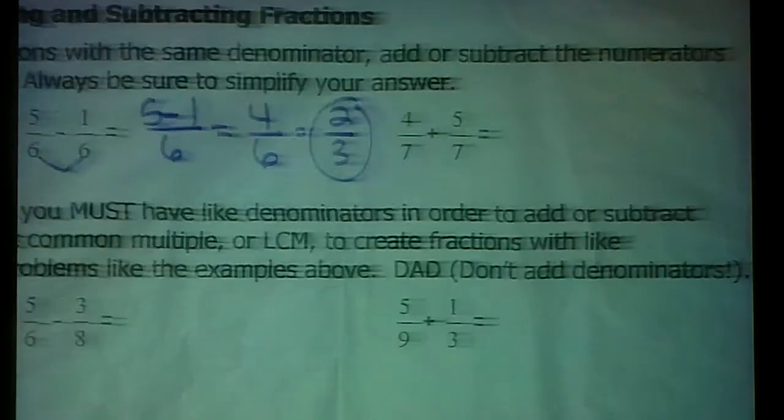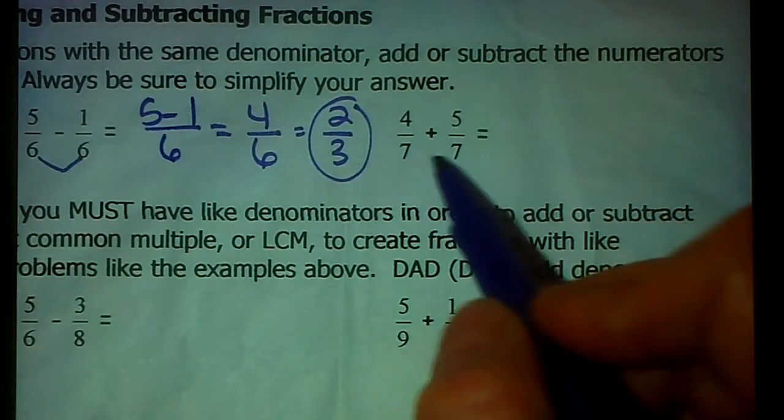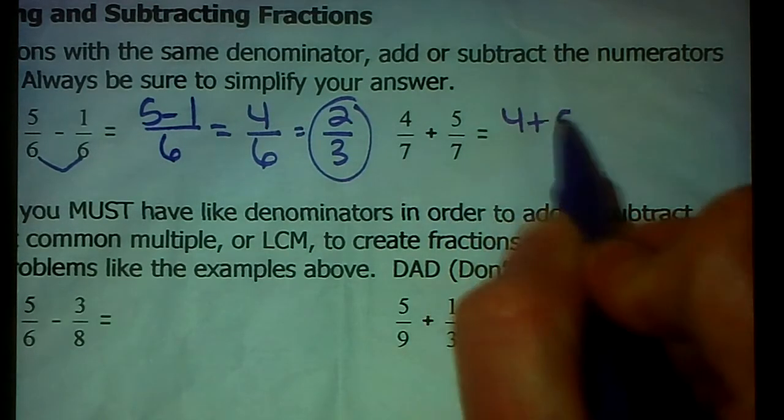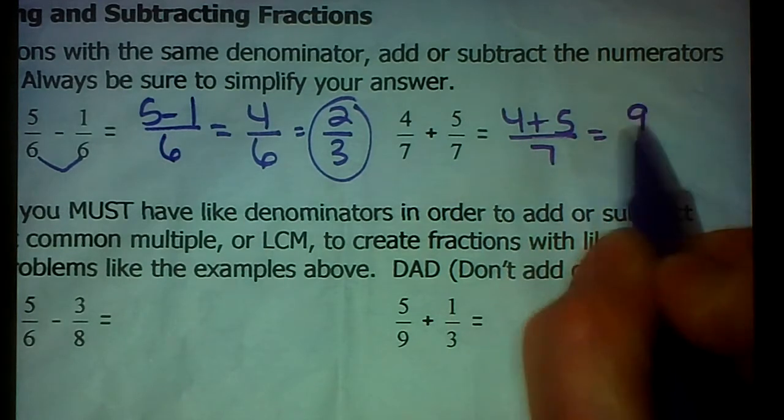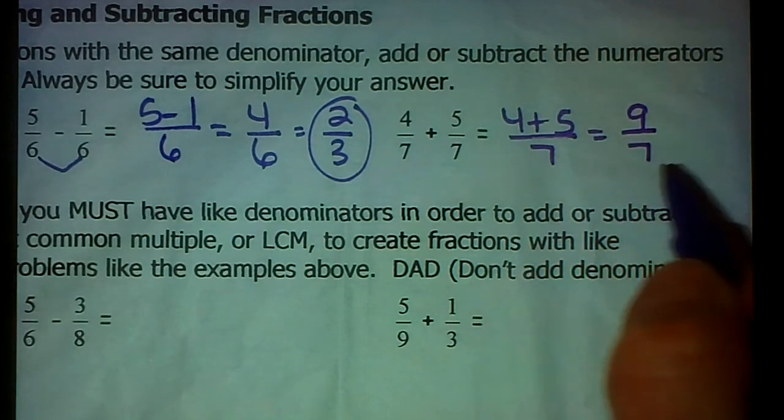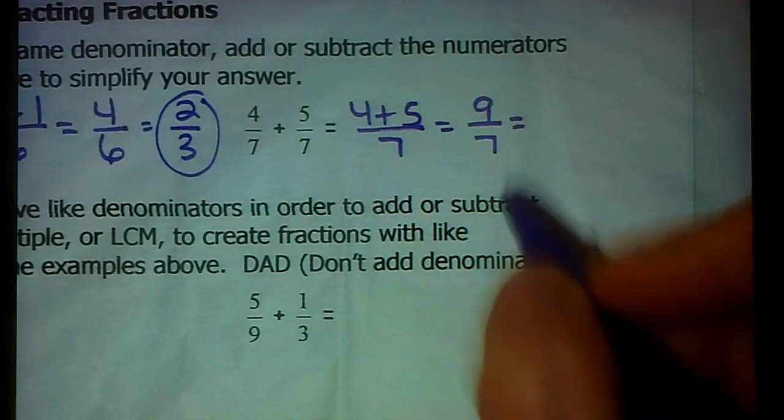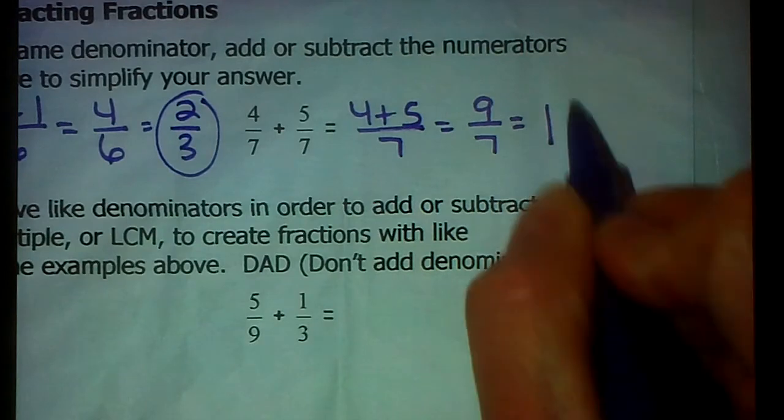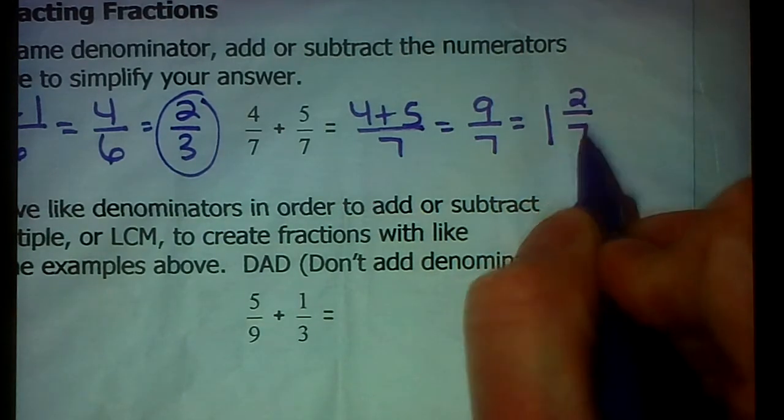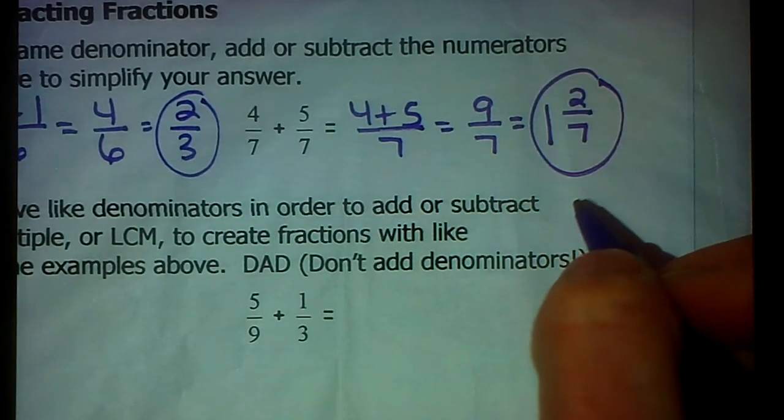Last one, we're back to addition again. And remember, Dad, don't add the denominators. Just add the numerators. Bring over the denominator. 4 plus 5 is 9. Bring over the 7. And yes, this is improper. This one I think we can do right in our noggins. 7 goes into 9 once. There are 2 left over, and out of 7. That denominator stays the same.